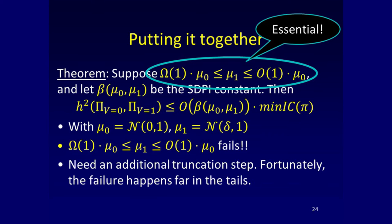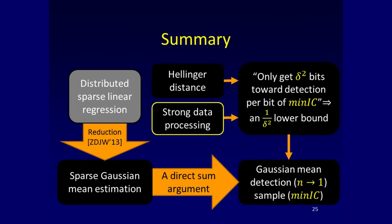To summarize: we had the sparse Gaussian mean estimation problem — estimating a Gaussian mean where most coordinates of the mean are fixed to zero. Using a direct sum argument, we reduced to detection: each machine gets a single sample and needs to detect whether those samples are centered around zero or around delta. Then, using the strong data processing inequality, we get a one over delta-squared lower bound. The two ingredients are the Hellinger distance argument and the strong data processing inequality, which is the new element in this context.